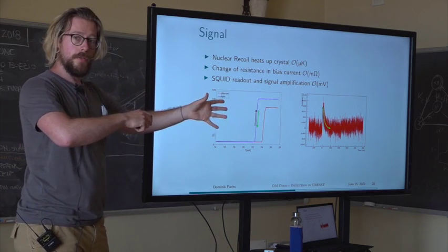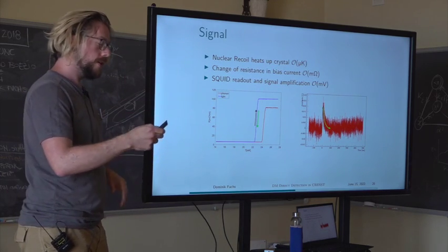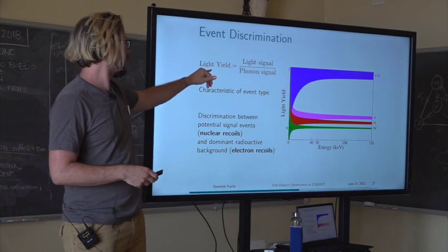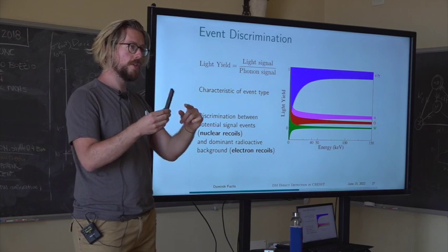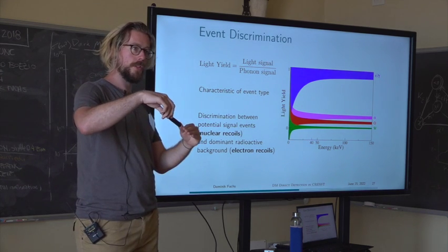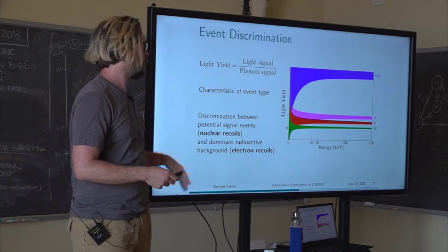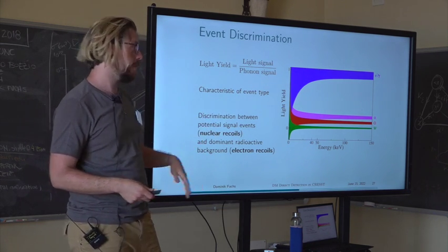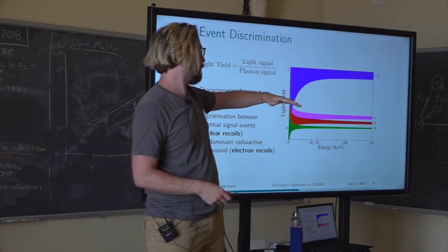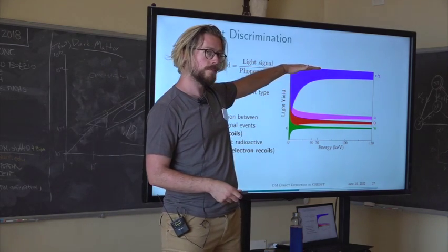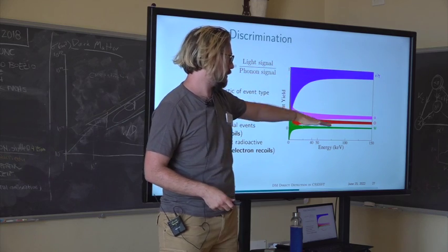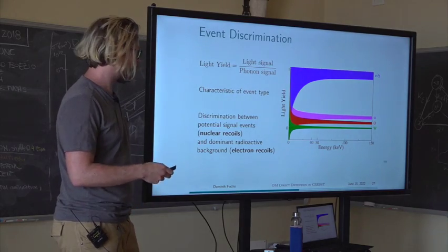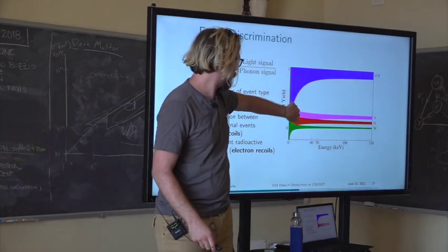We do this for both the main absorber and the light detector, and then put all events into a light yield plot. Light yield is defined as the light signal divided by the phonon signal for each event, calibrated so that our dominant radioactive background of electron recoils is defined as a light yield of one. Nuclear recoils we're looking for have a quenched light output, so up to a certain point we have a good handle on discriminating between these event types.